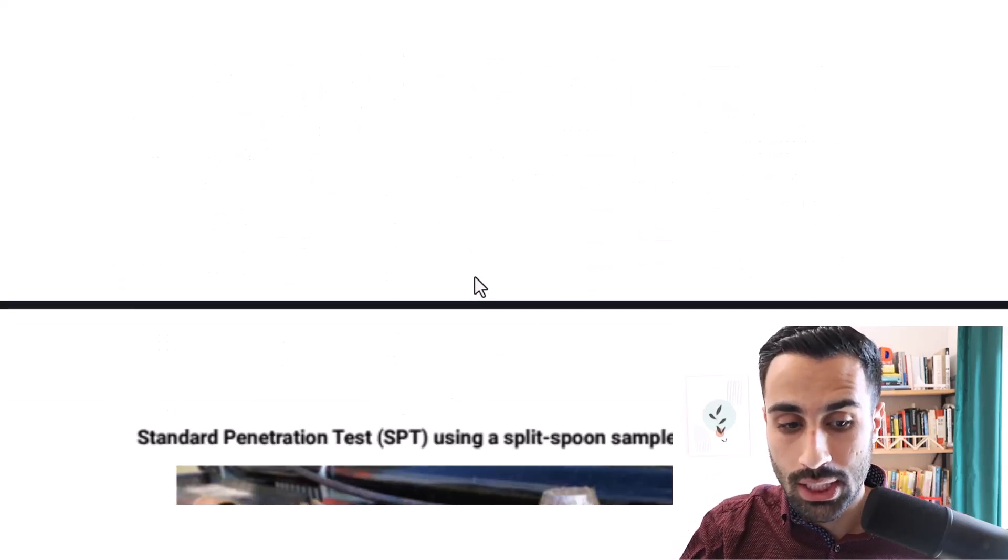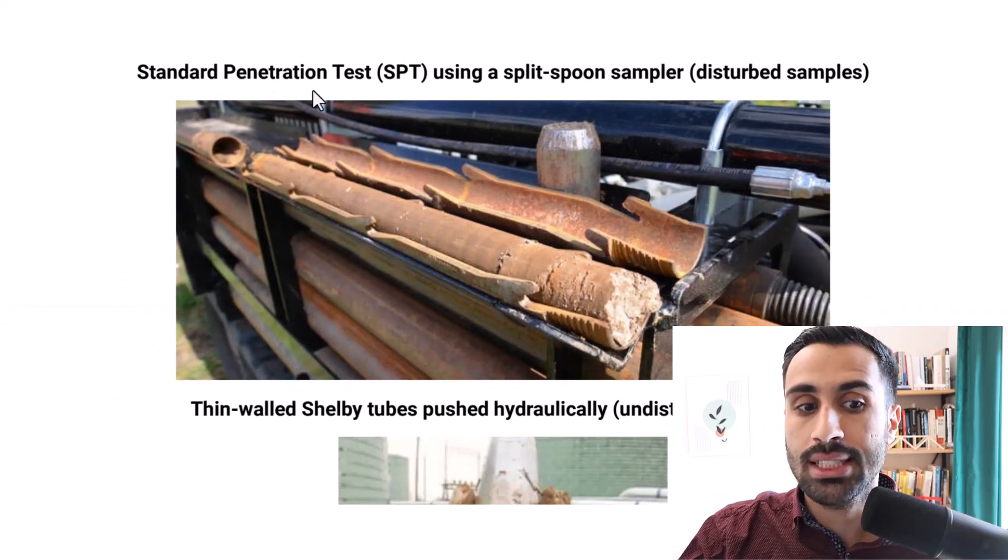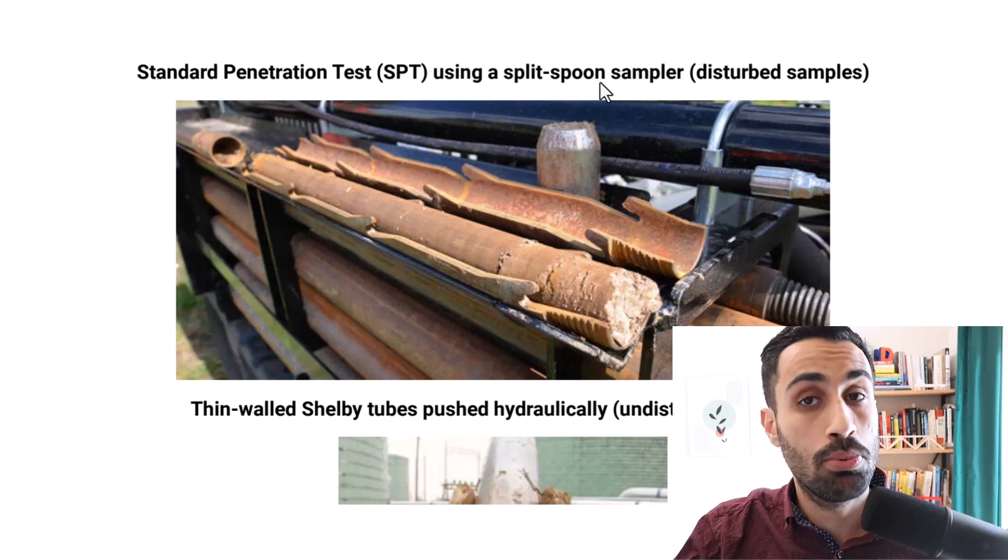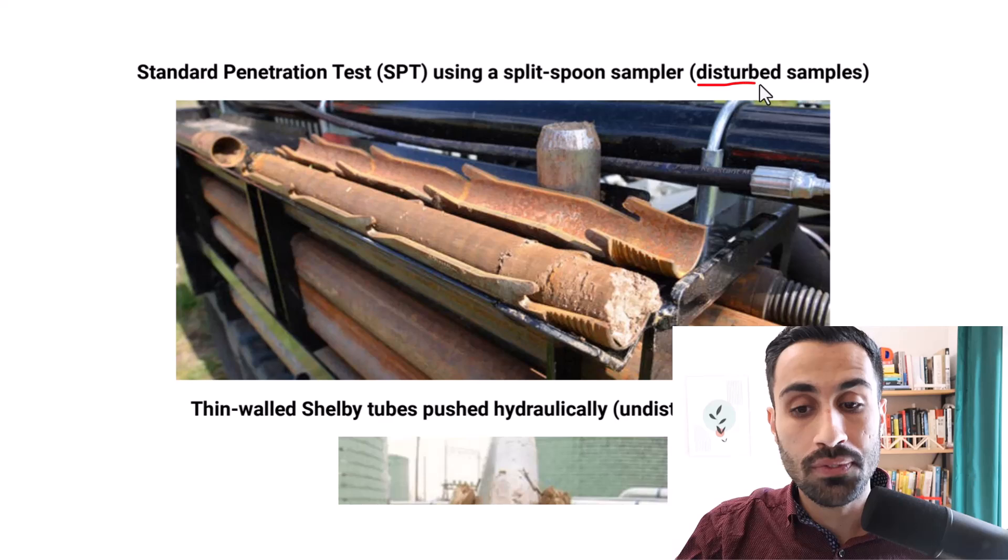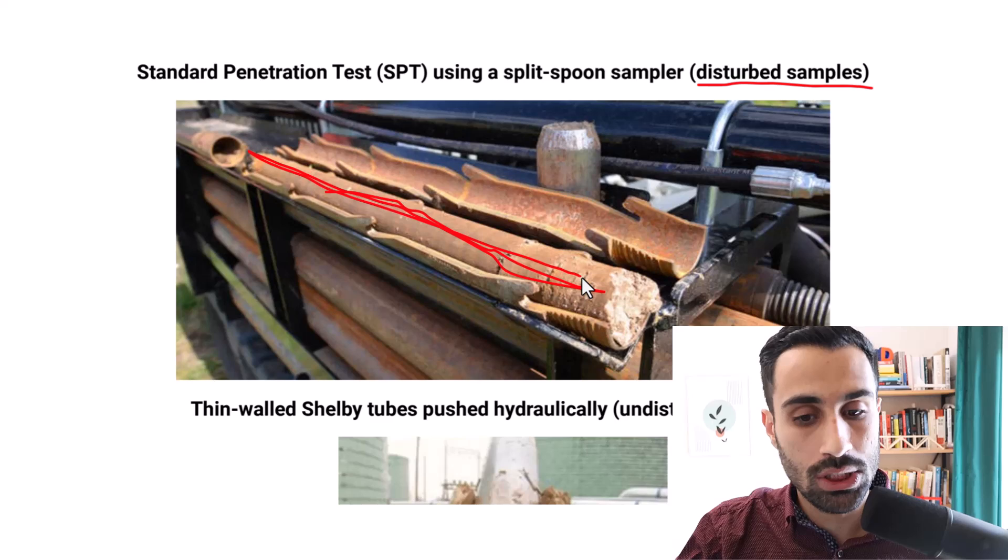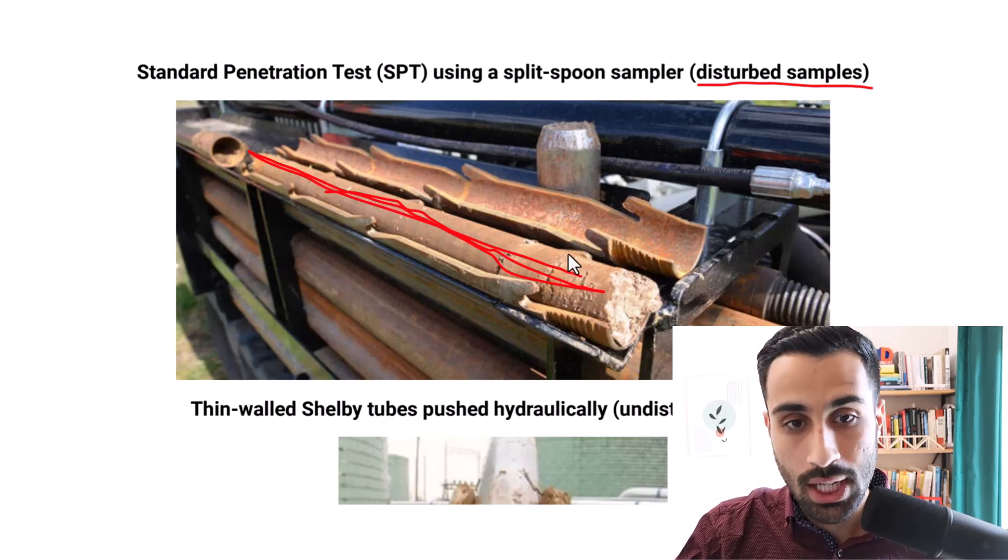Now to help you see this, let's look at this figure. This is the standard penetration test, the SPT. It uses the split spoon barrel. These are always for disturbed samples. So these samples that we see are disturbed. And we use these for classification, Atterberg limits, and so on.